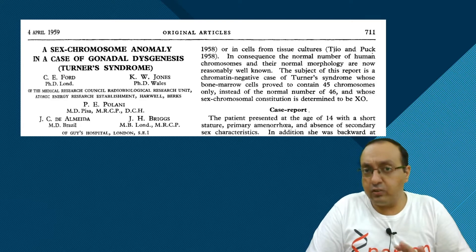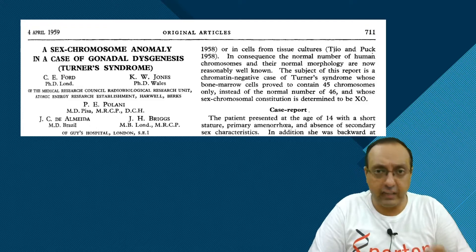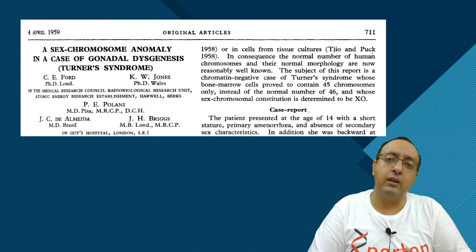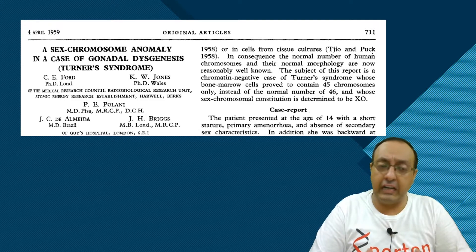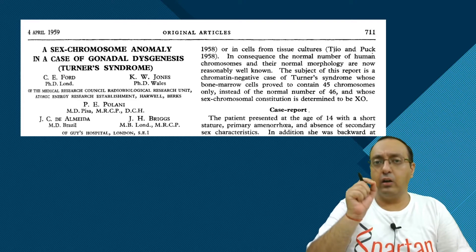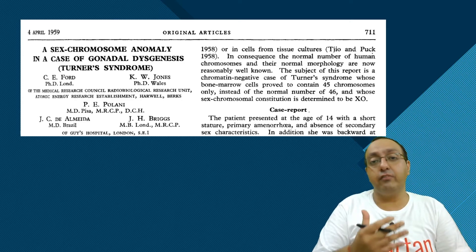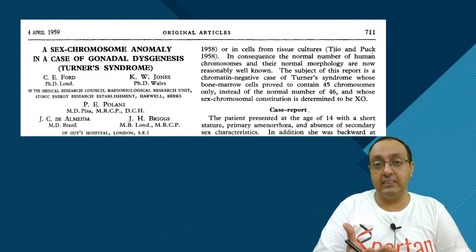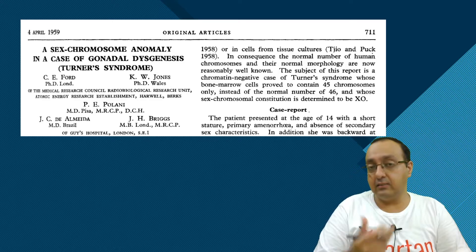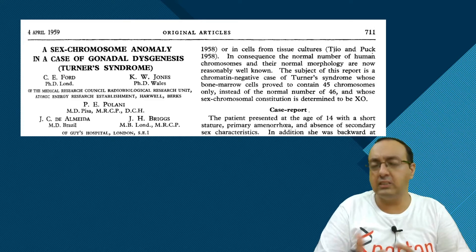The field of human cytogenetics really developed and took off after the identification of the correct chromosome number in 1956 by Tjio and Levan. With a correct reference for human chromosome number, we can look for deviations and see if developmental abnormalities or diseases are caused by chromosomal abnormalities. Aneuploidies, polyploidies, and monosomies began to turn up during this phase.